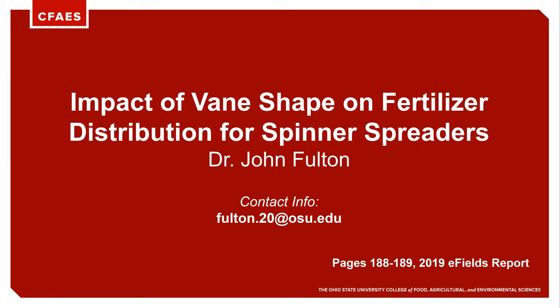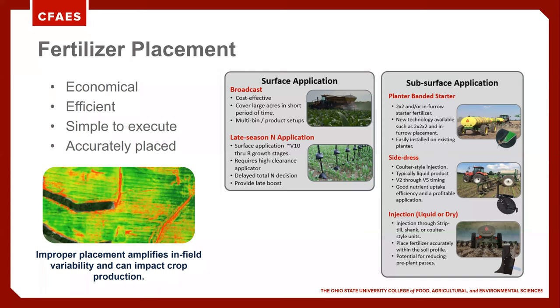This study is looking at the impact of vein shape on fertilizer distribution for spinner spreaders. This study complements the research ongoing here at Ohio State on a variety of surface and subsurface applications. We're focused here today on this study as we're looking at broadcast application for spinner spreaders.